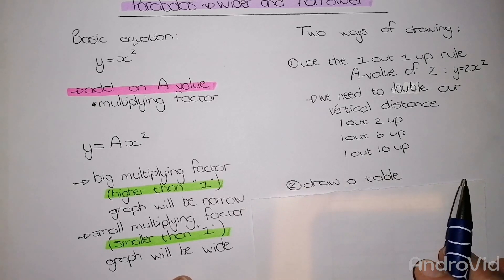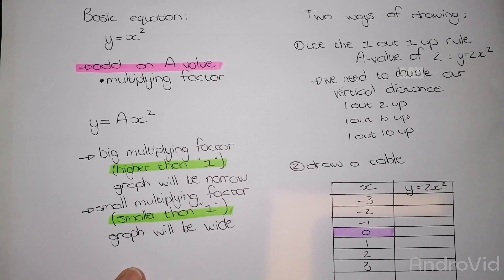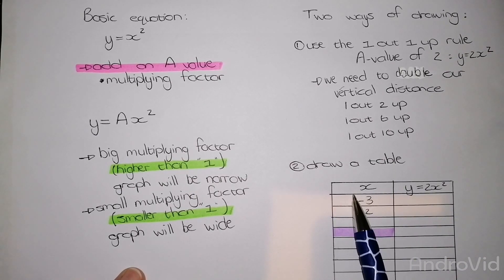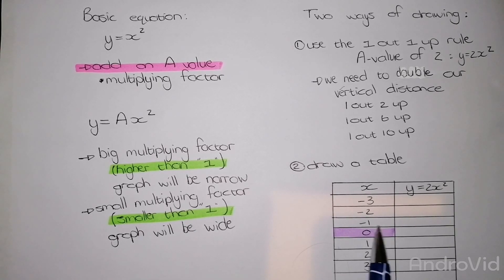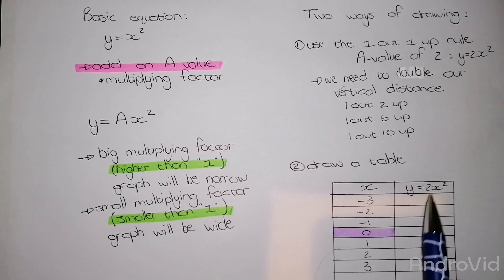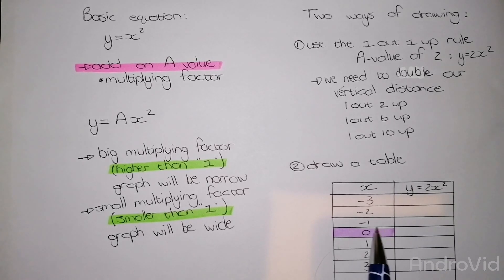The second way of doing it is drawing a table. With drawing a table, we are finding our different coordinates. Our starting point for my table is right in the middle where my vertex is. As we can see, this graph has not been moved horizontally or vertically, so my vertex will still be 0.